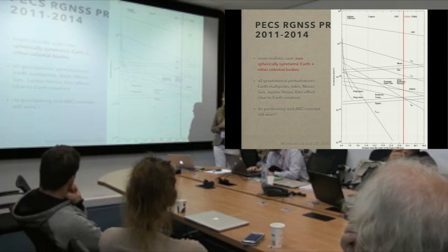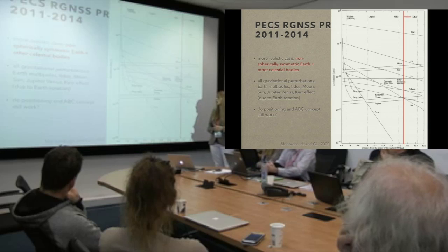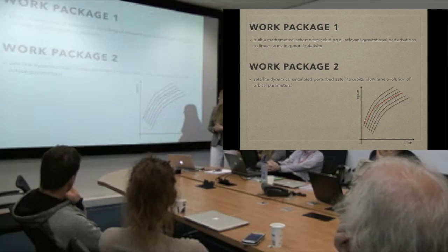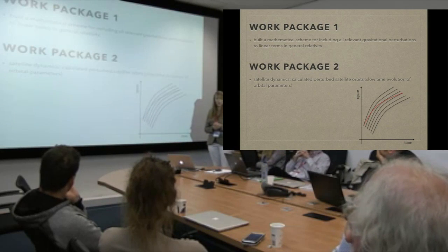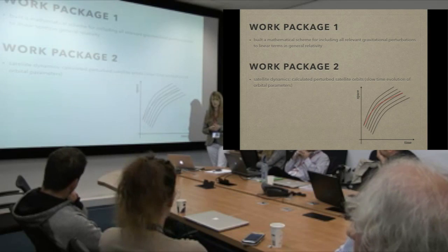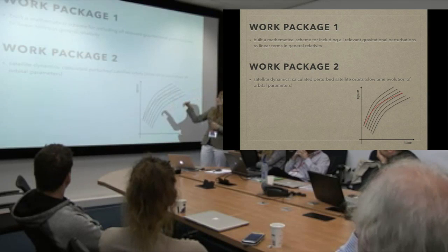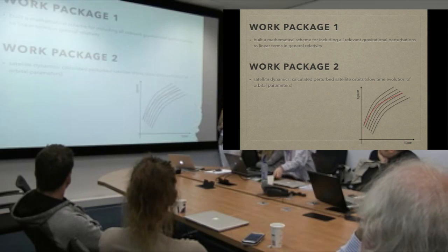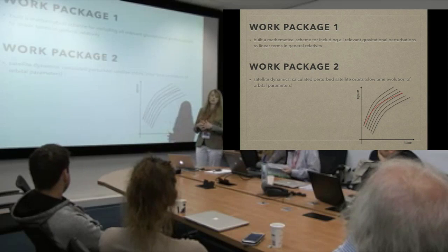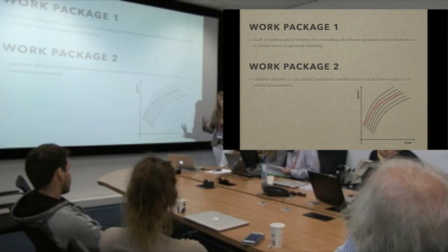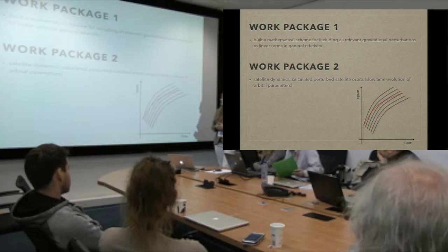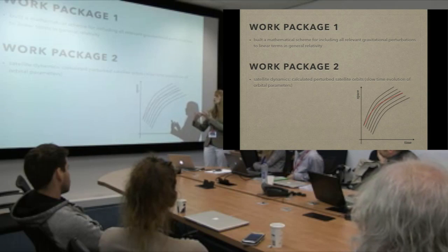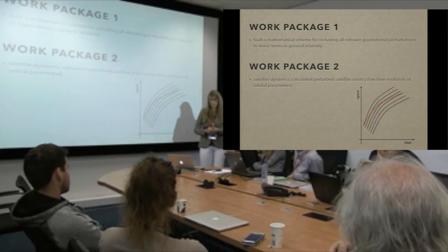We asked ourselves: do positioning and the ABC concept still work when these perturbations are present? In work package one, we built a mathematical scheme for including all these relevant perturbations in terms of general relativity. Then in work package two, we used this scheme to calculate satellite orbits, treating the problem by assuming that certain constants of motion and orbital parameters — like the semi-major axis — are no longer constant but change slowly due to perturbations, giving a slow time evolution of these parameters.